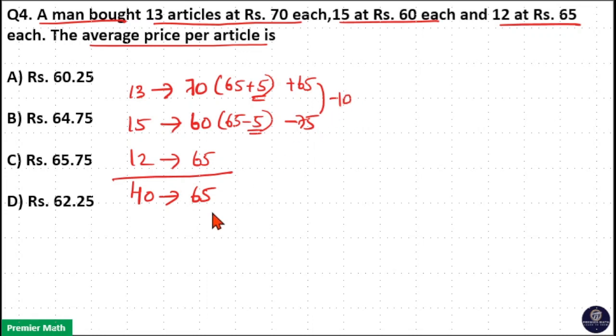So this minus 10 rupees should be equally distributed to these 40 articles. So minus 10 by 40, which is equal to 1 by 4, is 0.25. So 65 minus 0.25 is 64.75. So option B is your answer.